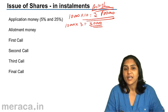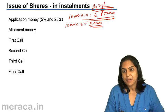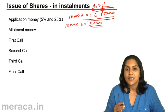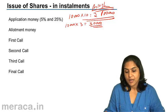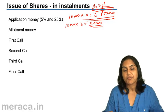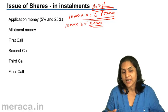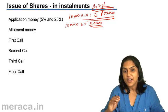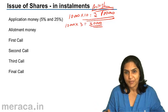Usually most companies, when they have a share issue, make the money payable in small installments. This is because the company may not require the entire sum of money immediately, and at the same time it also facilitates and helps the investors to invest in the shares of a company in installments.